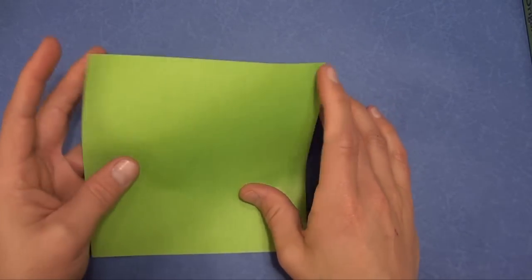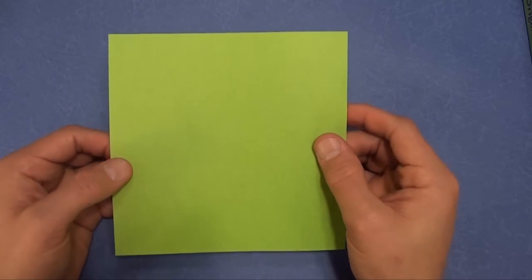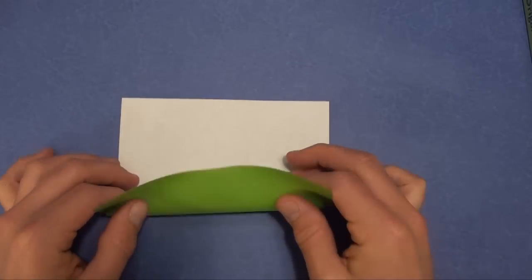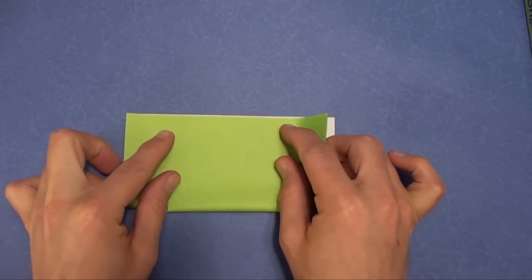So the flasher can really be folded from any size sheet of paper, but I'm going to show you how to fold it from a 6 inch square of kami. Start white side up, valley fold in half.